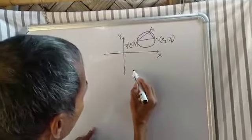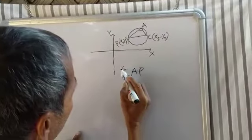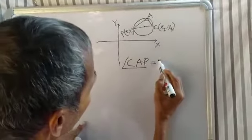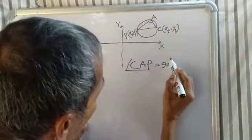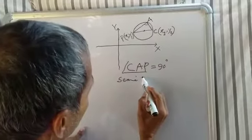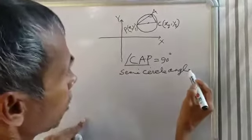Angle CAP equals 90 degrees because semicircle angle. Semicircle angle is 90 degrees by condition.